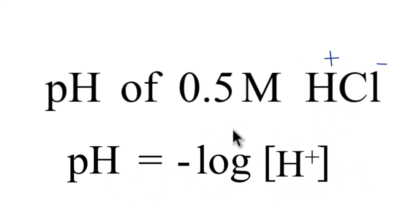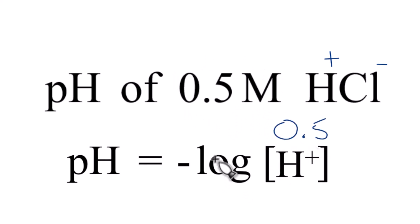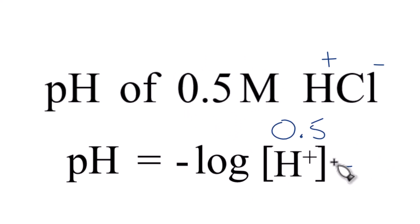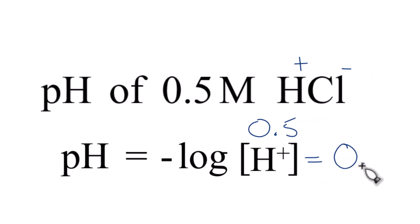So we're just taking the negative log of 0.5, like this. And the negative log of 0.5, that equals 0.3. And that's the pH.